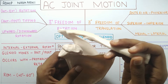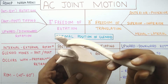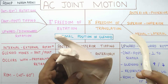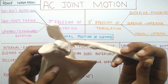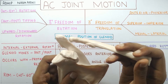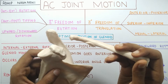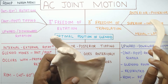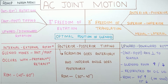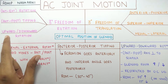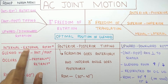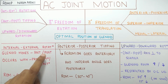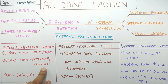A medial force occurs if you are falling on the ground. A lateral force occurs if you are hanging from a branch — your scapula will be pulled away from your clavicle. Those are the translatory forces that can be imposed on your AC joint. Now let's talk about the rotatory motions. The first is internal and external rotation, next is anteroposterior tipping, and then upward and downward rotation. During internal and external rotation, the glenoid moves anteriorly or posteriorly, occurring with protraction and retraction, with a range of motion of around 40 to 60 degrees.